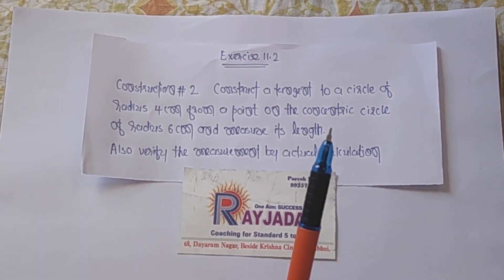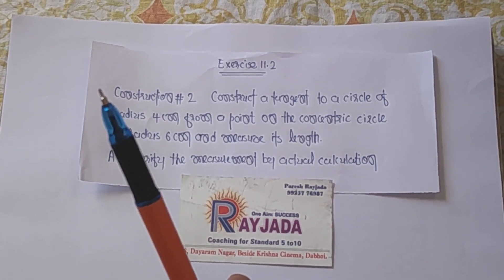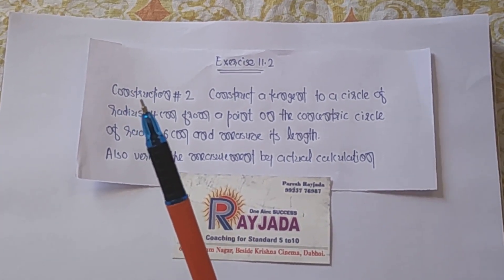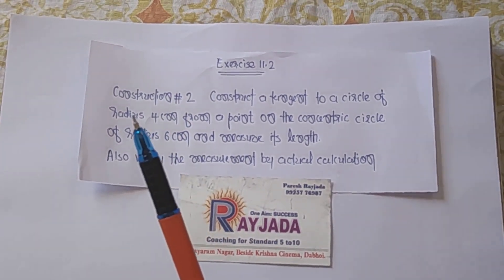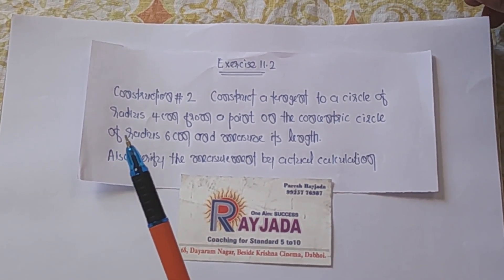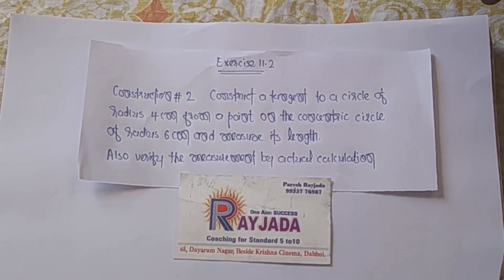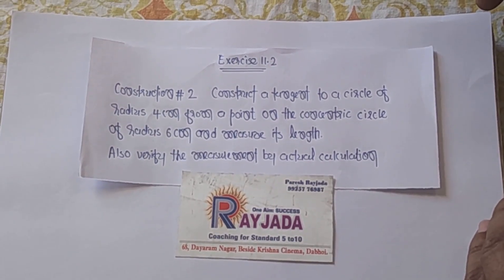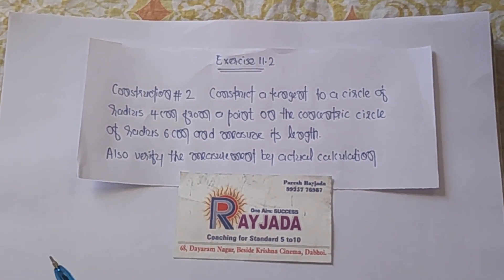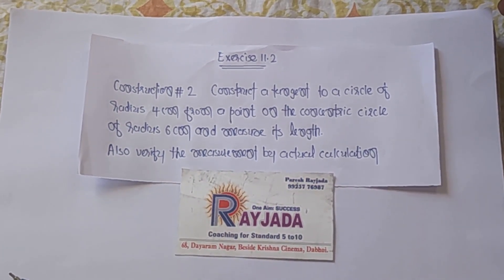Dosto, yahan par humein 2 circles diye hain. Dono ka center ek hi hai. Ek circle hai jiski radius 4 cm, doosra circle hai jiski radius 6 cm. Dono ka center ek hi hai. Doosre, yani bigger circle ke ek point mein se smaller circle ko tangent draw karna hai. Phir un dono tangent ki length measure karni hai.